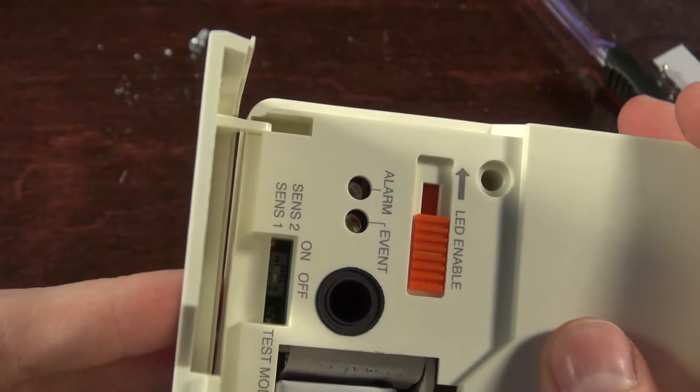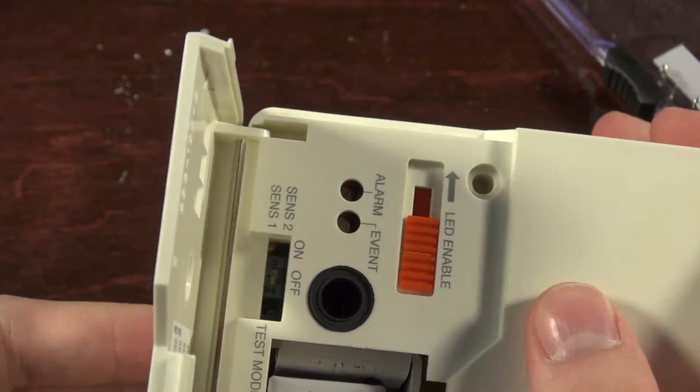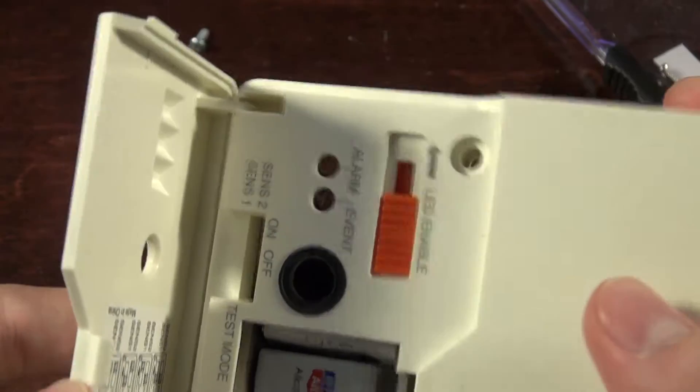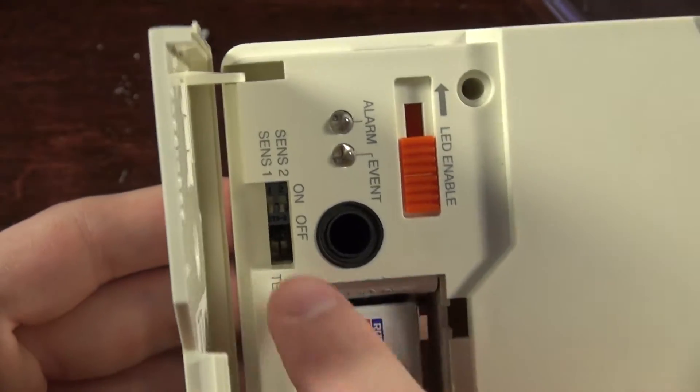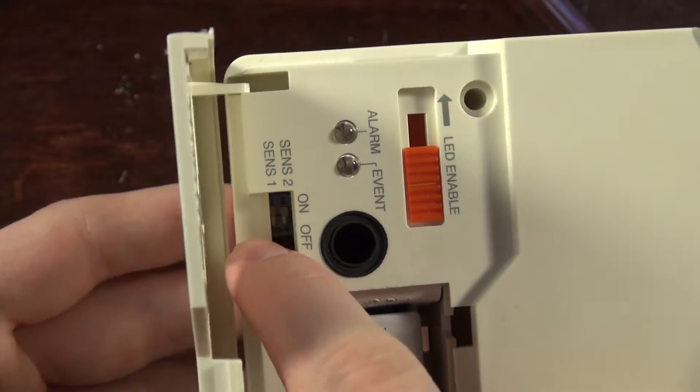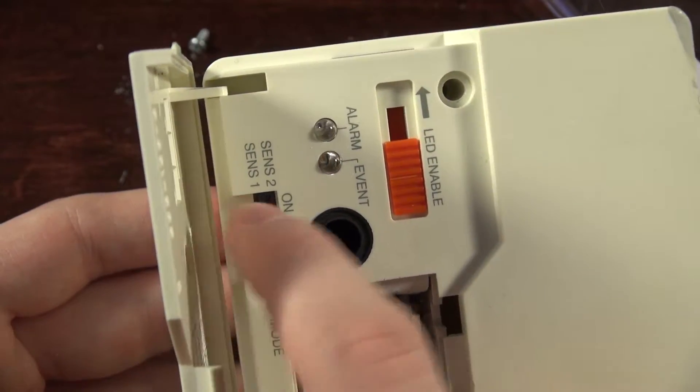Alarm and event lights. We've got some sort of selector switch. There's... sorry, this fell apart. There we go. You can change the two switches down there.